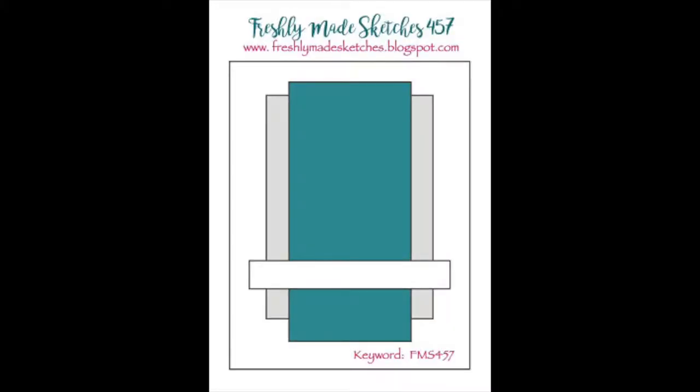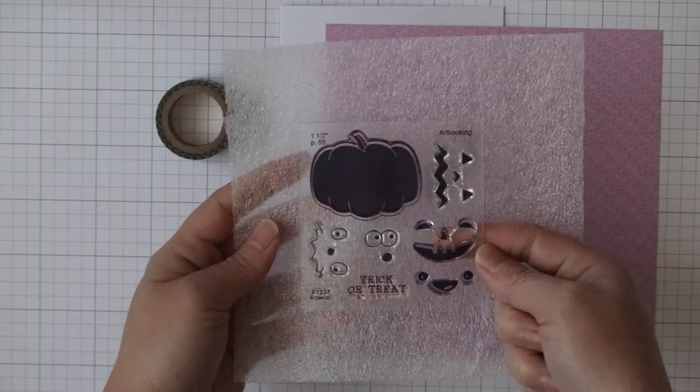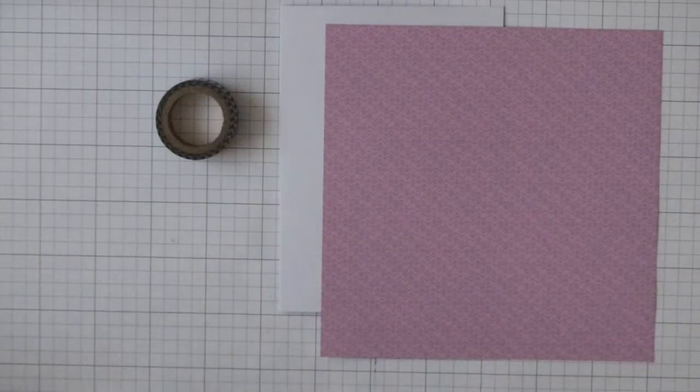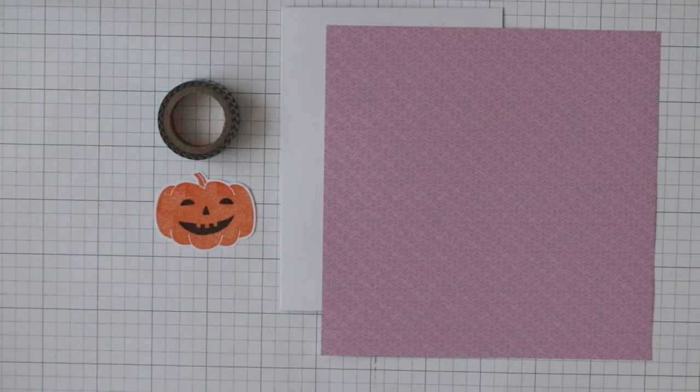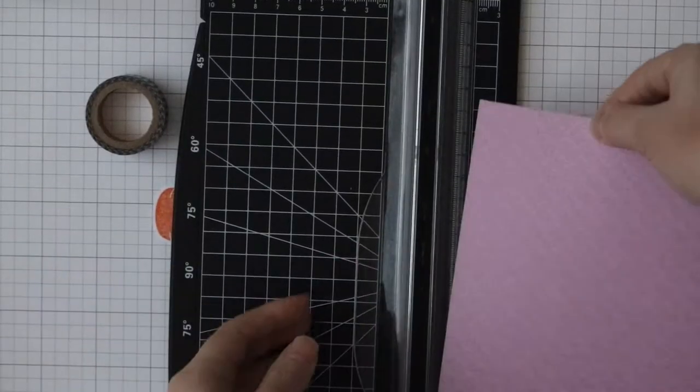So I need a center panel like so. I'm using jack-o-lantern faces from Close to My Heart and I already stamped with a happy face and cut it out just to save some time.